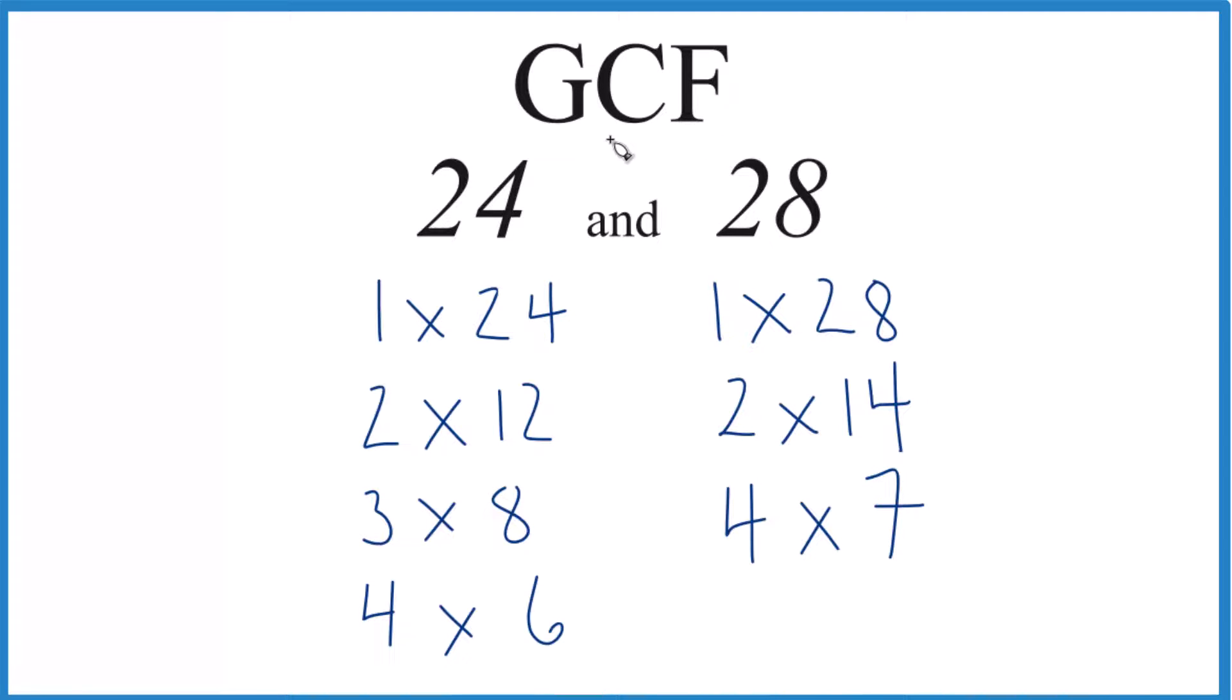So we have our factors, now we just look at what's in common, choose the greatest one. 1, that goes into 24, 1 goes into 28, that's a common factor. 2, that's a common factor as well. No, but how about 4? 4, that looks like the greatest common factor.